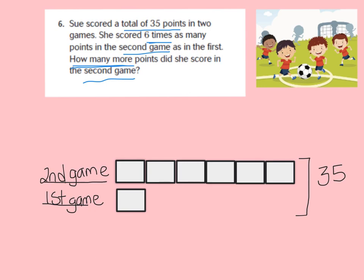Now that we have our model filled in, we can go ahead and find our equation to help us find our answer. We need to write the unknown number N in each box to represent that unknown number. We can write our equation: 35 equals... let's count all the Ns — 1, 2, 3, 4, 5, 6, 7 Ns. I have N 7 times. So 7 times N equals 35.